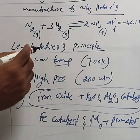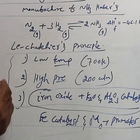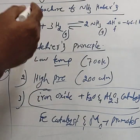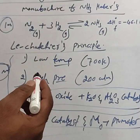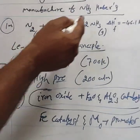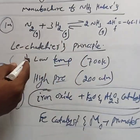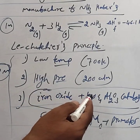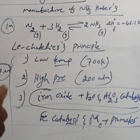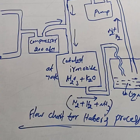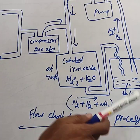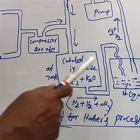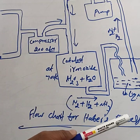Sometimes they can ask: write any two favorable conditions for the manufacture of ammonia by Haber process, which carries two marks. The reaction carries one mark. In other cases, if they ask to explain the manufacture of ammonia by Haber process, you have to write the reaction N₂ + 3H₂ → 2NH₃, then by Le Chatelier's principle the favorable conditions, and also write the flowchart. Without the labeled diagram you will not get the mark.